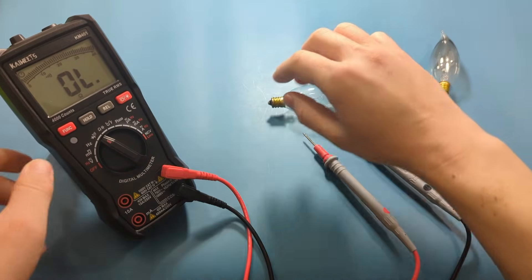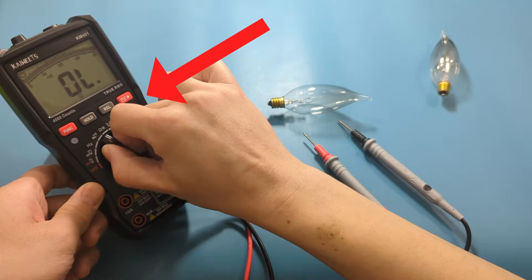The next test is to check for resistance. Turn the dial on the multimeter to the ohm setting.